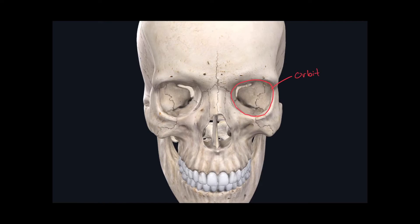Within the orbit, there are two little slots. One mainly made up by the sphenoid bone, and one just inferior to it. The superior slot is called the superior orbital fissure, and then the one underneath it is called the inferior orbital fissure.